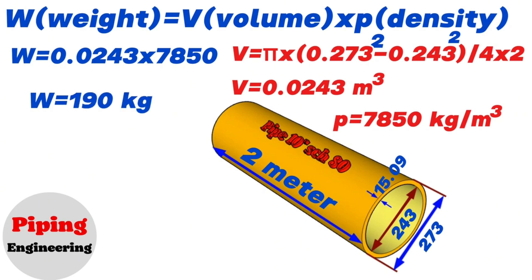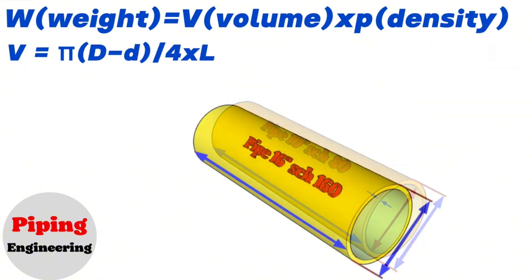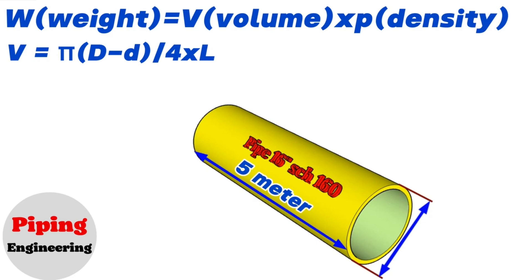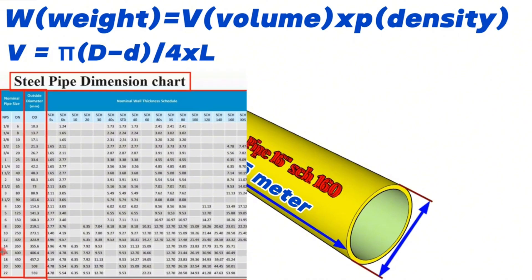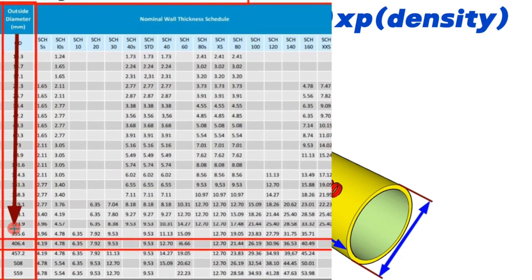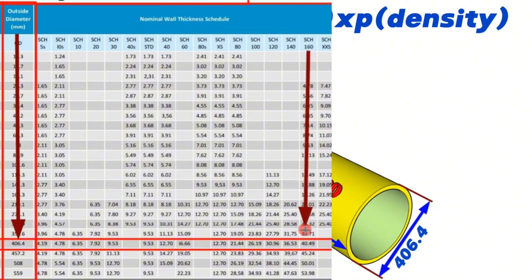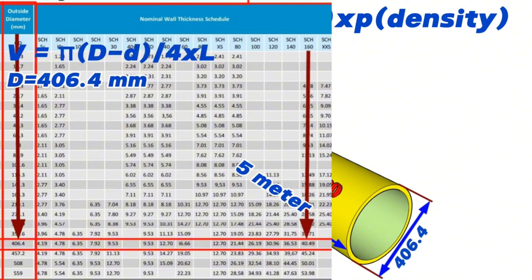Now let's calculate the weight of a 16-inch iron pipe with a wall thickness of schedule 160 and a length of 5 meters. Since we know some of the calculations now, I won't repeat them and will move quickly. From the pipe size chart, we find that the outer diameter of the 16-inch schedule 160 pipe is 406.4 millimeters and the wall thickness is 40.49 millimeters.